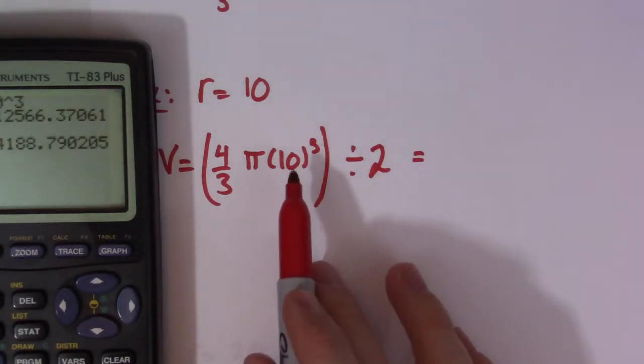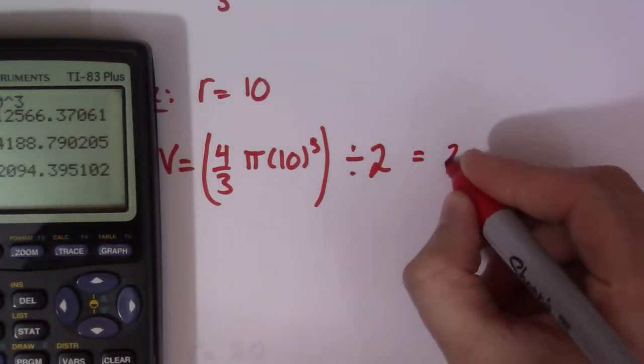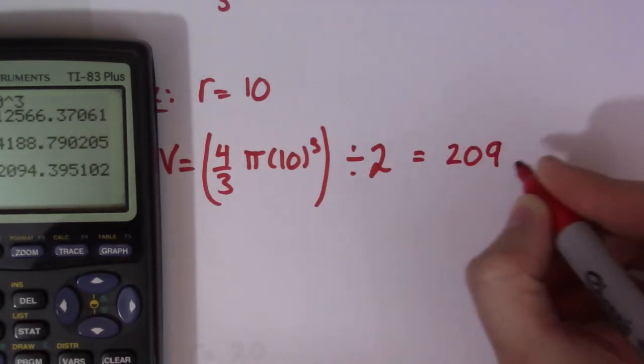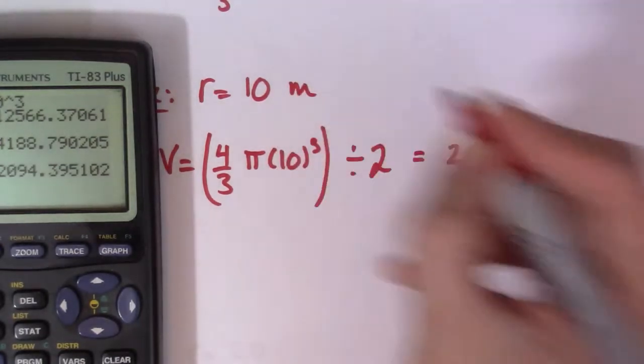That's my sphere right there. Then all I do is take that number and divide it by two. This gives me my hemisphere: 2,094 meters cubed.